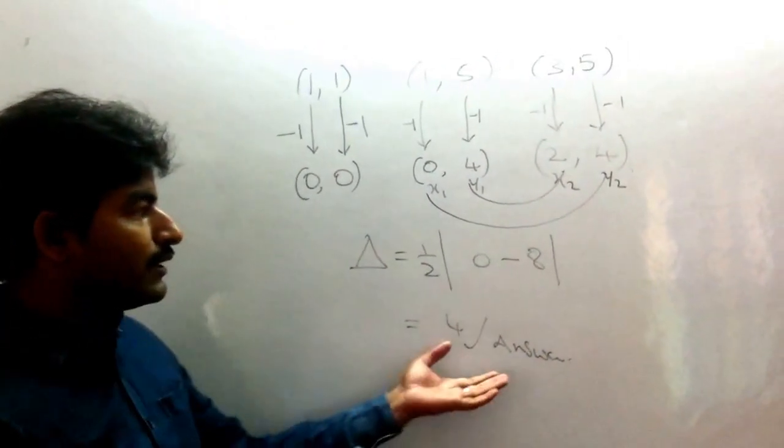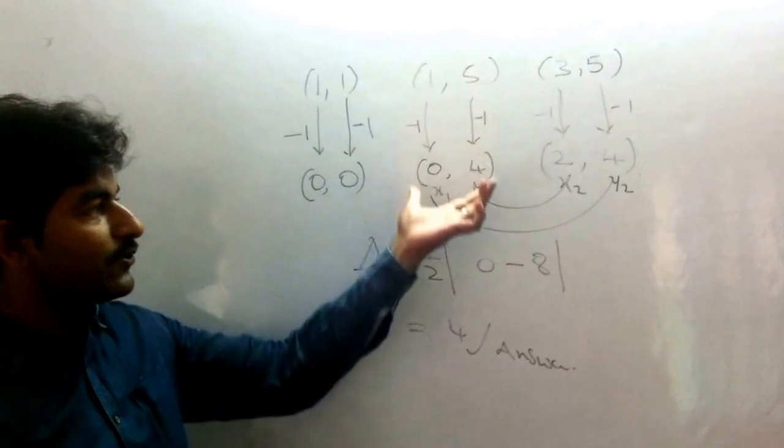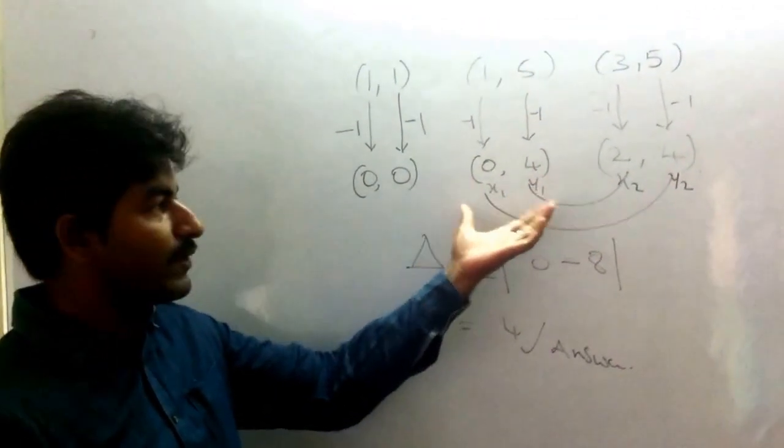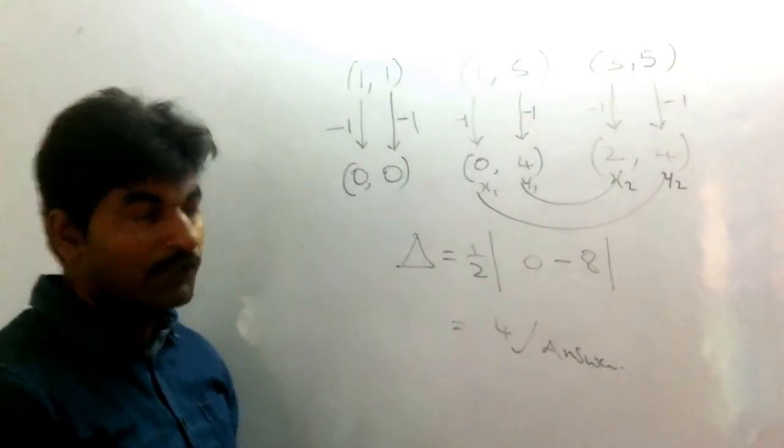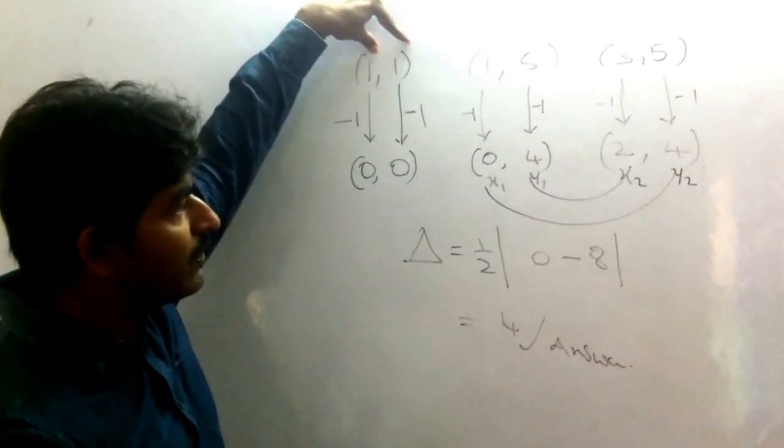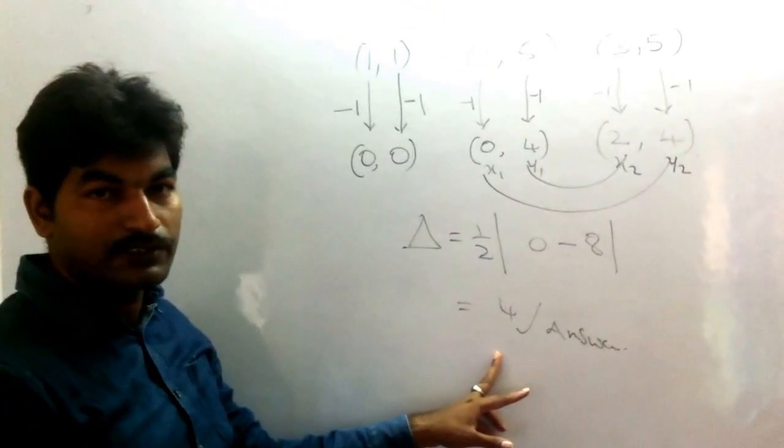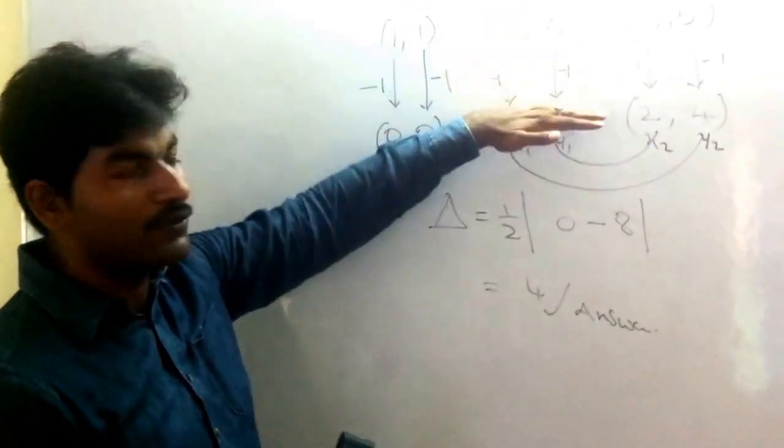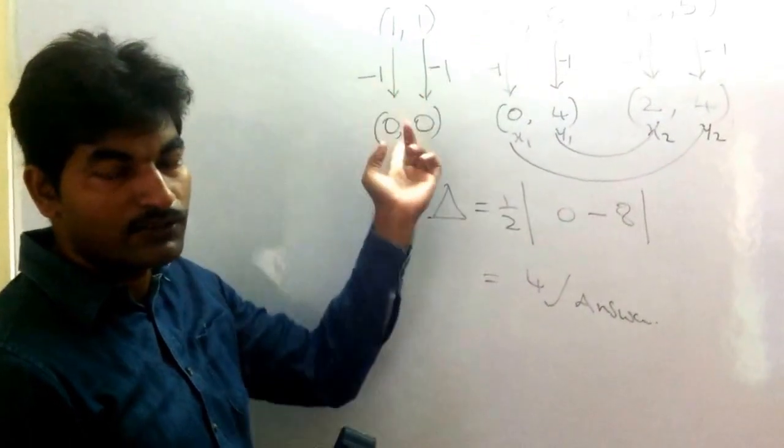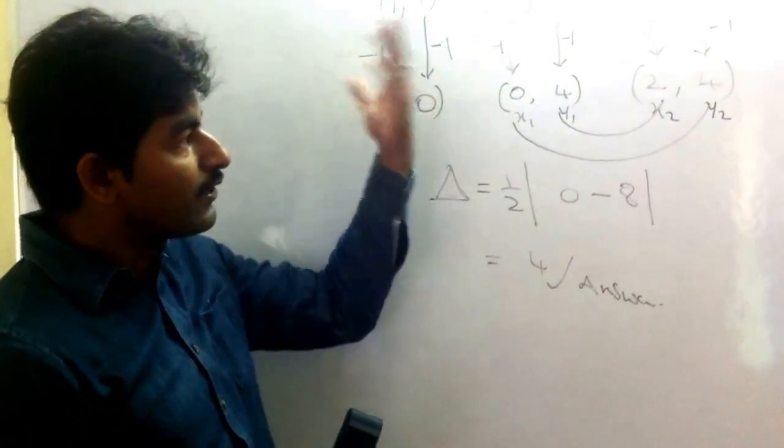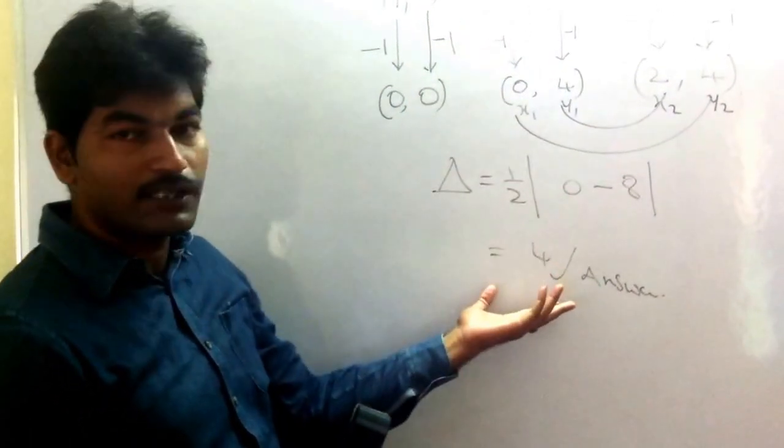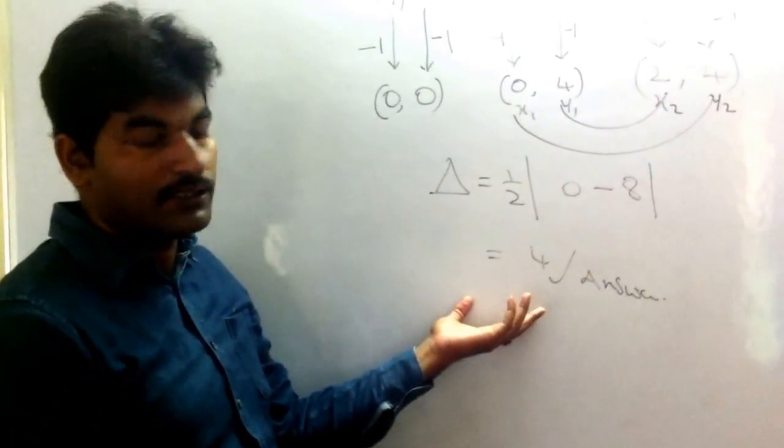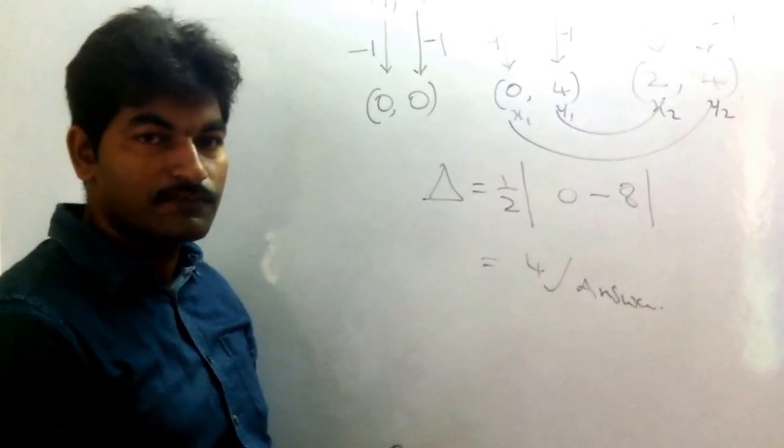So you can observe that if the triangle is shifted, the area doesn't change. That is the main thing here. If you use these three given points, you have the same area - four units. When you are shifting the vertices of the triangle so that one vertex is at the origin, the area of the triangle remains unchanged. You have the same area of the triangle, which is four units. Thanks, thank you.